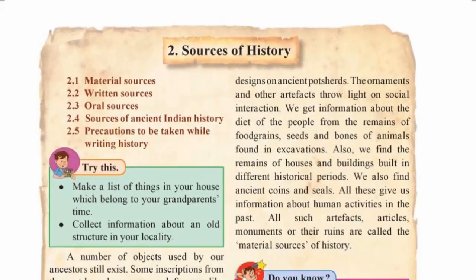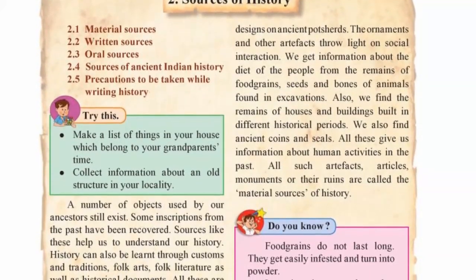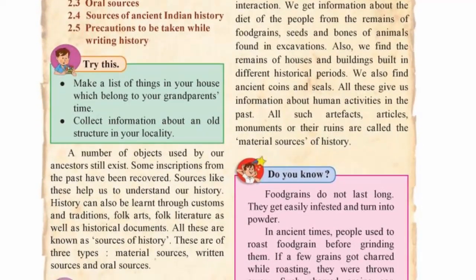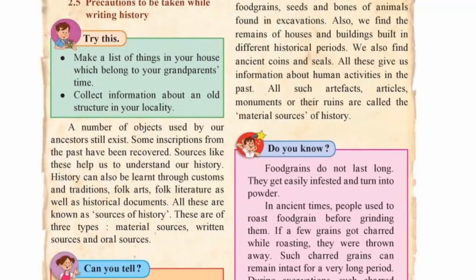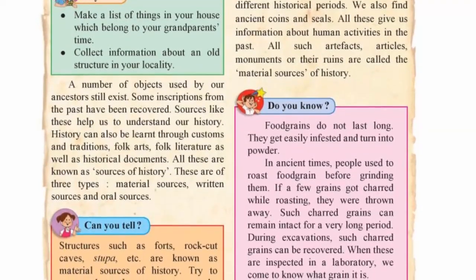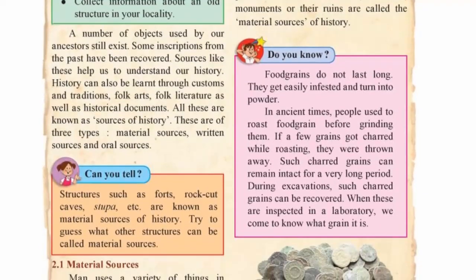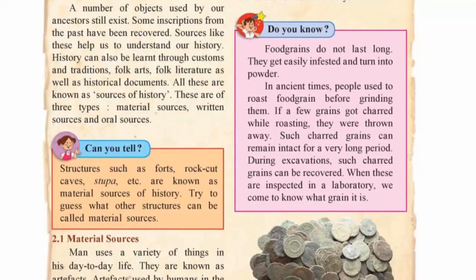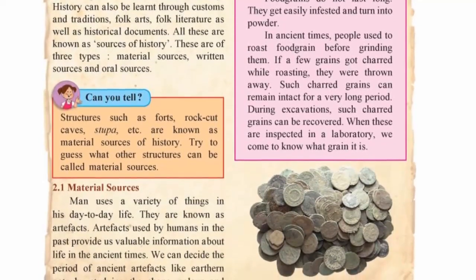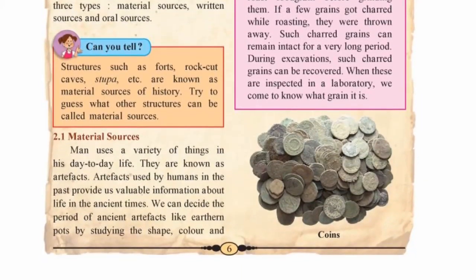Second, material sources. Man uses a variety of things in his day to day life. They are known as artifacts. We can decide the period of ancient artifacts like earthen pots by studying the shape, color and designs on pot sherds. We get information about the diet of the people from the remains of food grains, seeds and bones of animals found in the excavations. We also find ancient coins and seals. The artifacts, articles, monuments or the remains are called material sources of history.